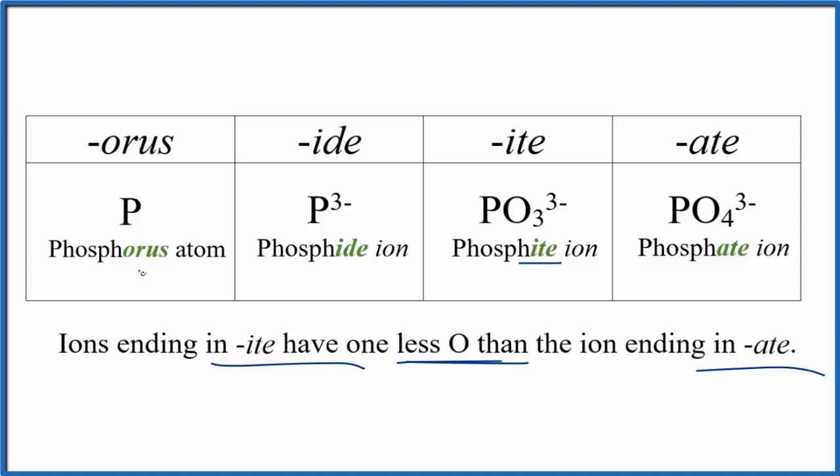So that's the difference between phosphorus, the phosphorus atom, the phosphide ion, the phosphite ion, and the phosphate ion. This is Dr. B, and thanks for watching.